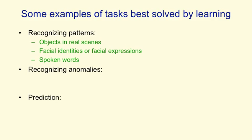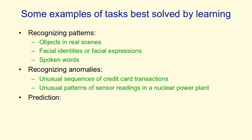There's also recognizing anomalies. An unusual sequence of credit card transactions would be an anomaly. Another example would be an unusual pattern of sensor readings in a nuclear power plant. You wouldn't really want to deal with those by doing supervised learning where you look at the ones that blow up and see what caused them. You'd really like to recognize that something funny is happening without any supervision signal — it's just not behaving in its normal way.